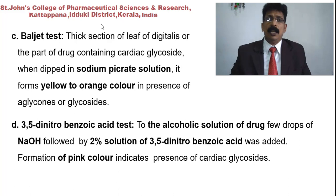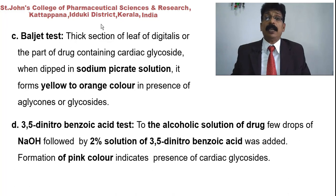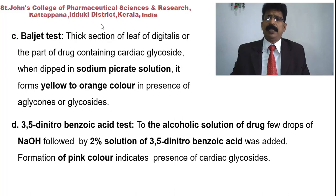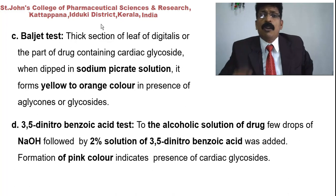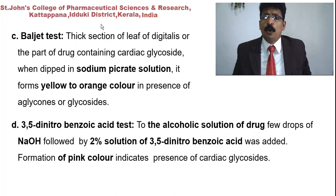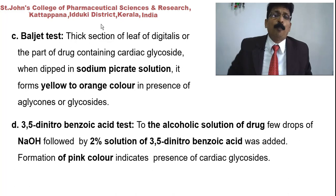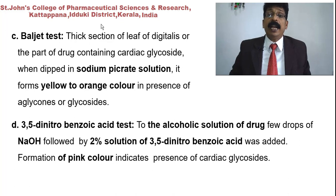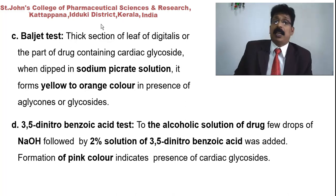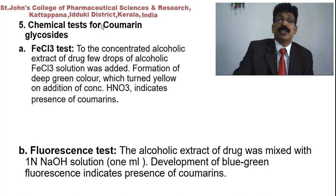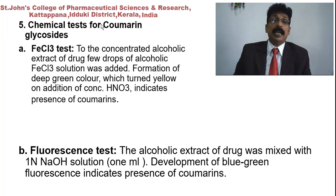Baljet test for cardiac glycosides: a thin section of the leaf (e.g., digitalis) or part of the drug is dipped in sodium picrate solution; formation of yellow to orange color indicates presence of the aglycon of glycosides. 3,5-Dinitrobenzoic acid test: to the alcoholic solution of the drug, a few drops of sodium hydroxide are added, followed by 2% solution of 3,5-dinitrobenzoic acid. Formation of pink color indicates presence of cardiac glycosides.